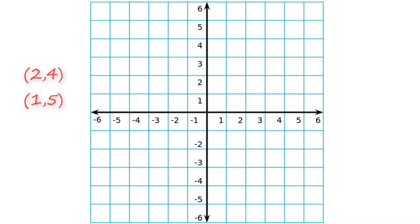Let's say we have the ordered pairs (2, 4) and (1, 5). First we have to graph both of them. If you go up the x and y axis, you'll find that (2, 4) is here and (1, 5) is here.